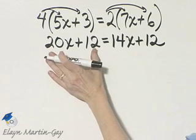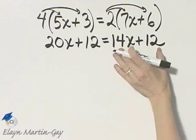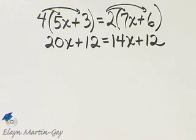All right, we have no terms that can be combined on the left side, none that can be combined on the right side. Let's now take a step and move variable terms to the left side and numbers or constants to the right side.